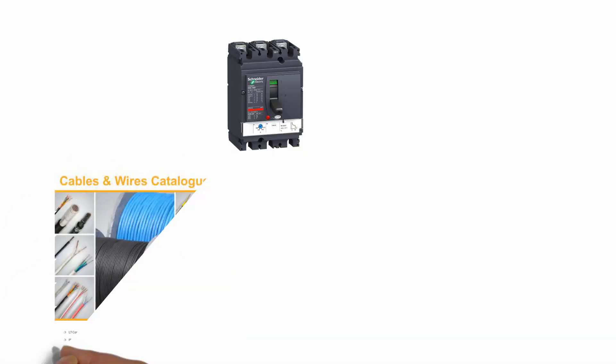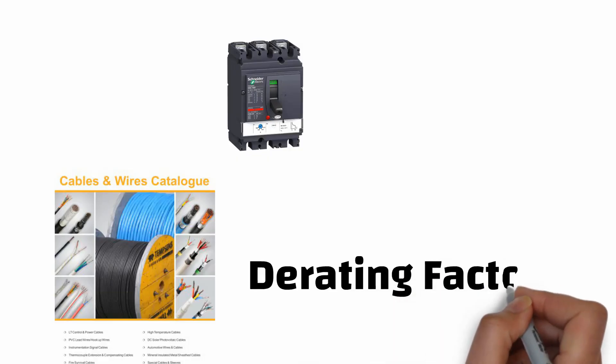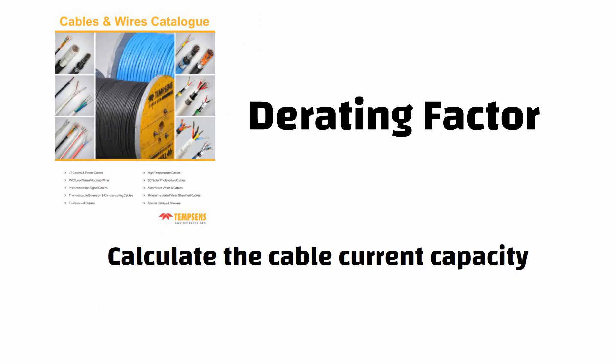Step 3: Determine the cable and its manufacturer, whether it is copper or aluminum. Step 4: Determine the derating factors. Step 5: Calculate the required cable current capacity.